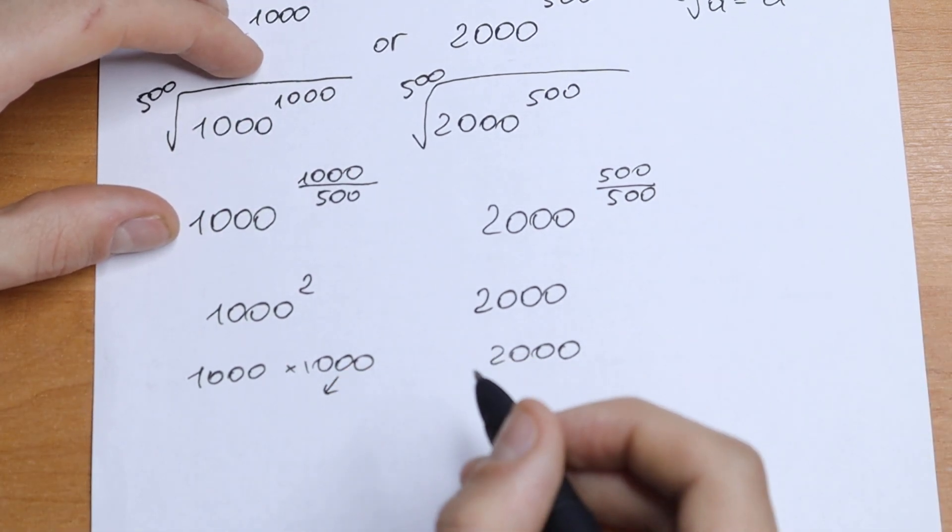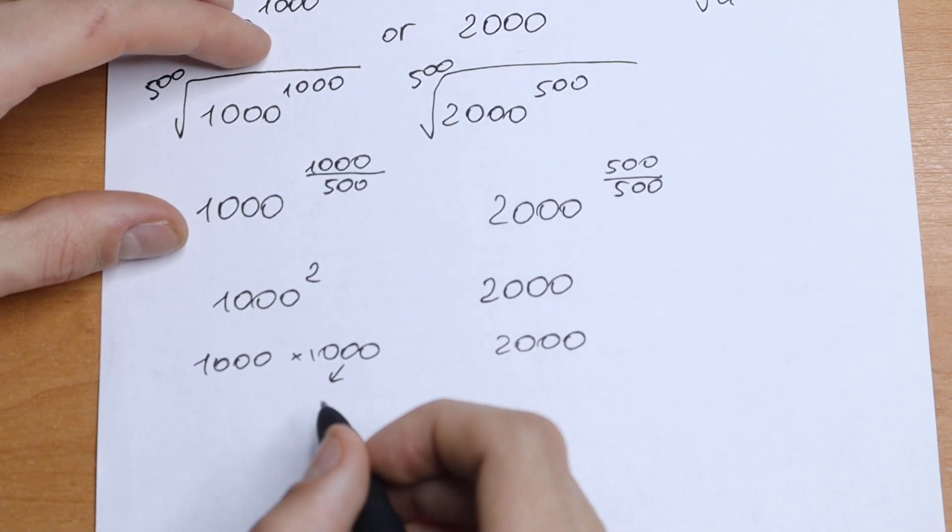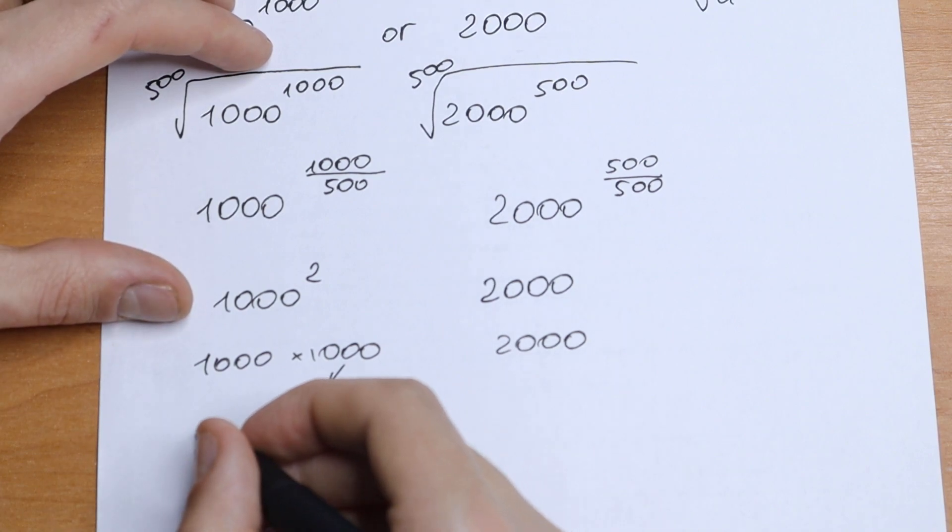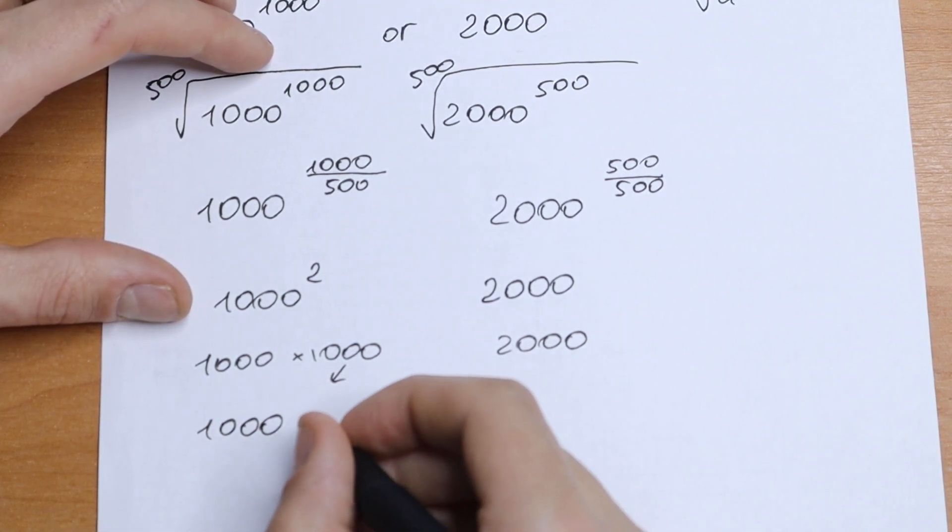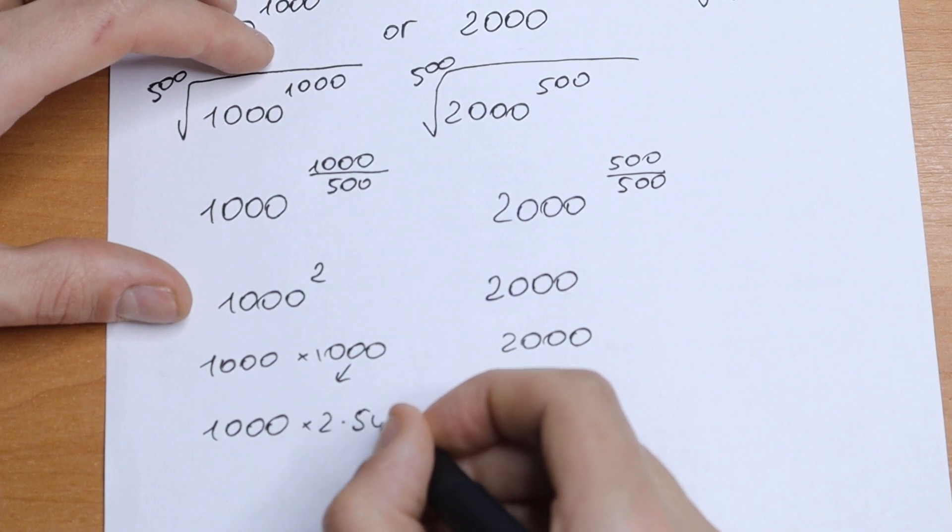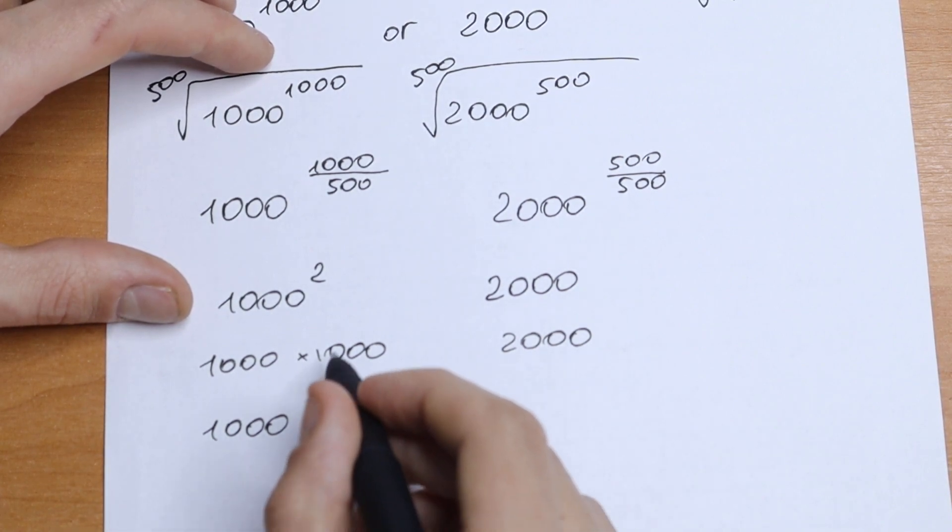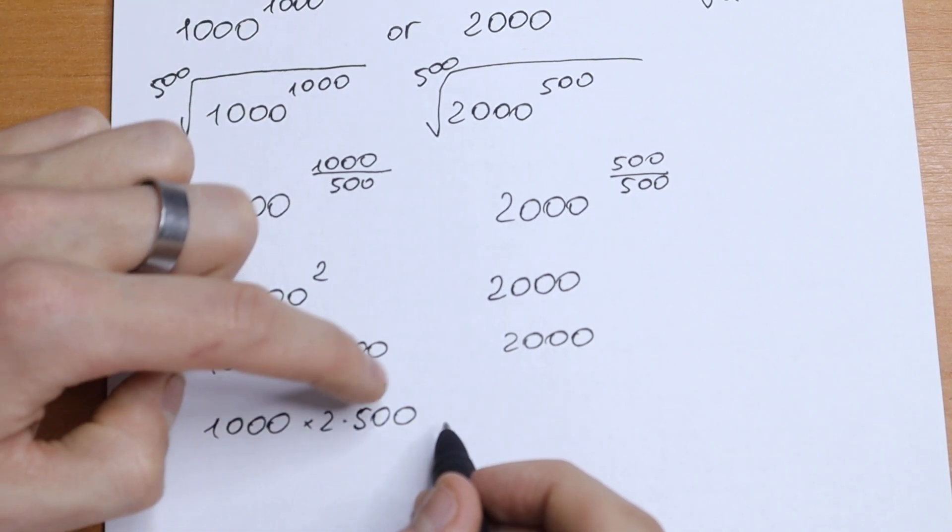Let's write this 1000 as 2 times 500. What we will have? 1000 times 2 times 500. So this will be our 1000. I write it as 2 times 500.